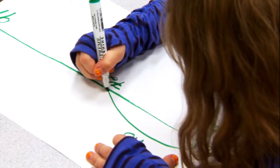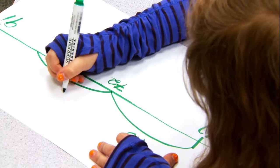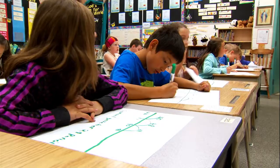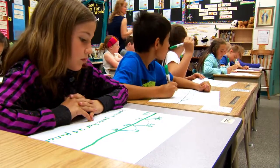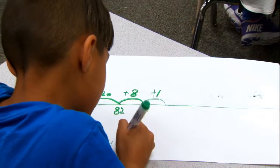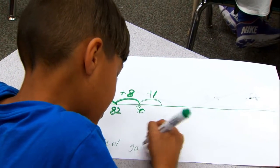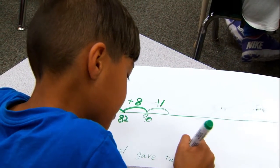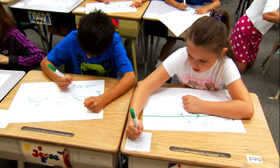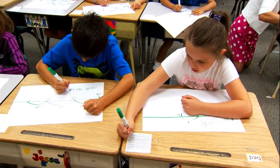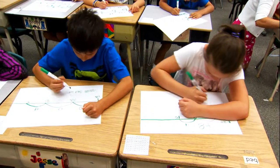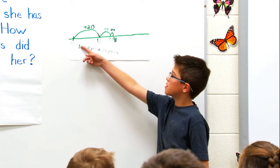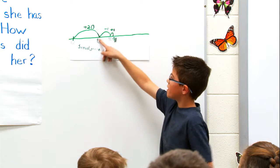The open number line is a number line with no numbers or markers. It starts out empty and the students add numbers to solve the problem. The student makes jumps along the number line and records both the value of the jump and the number landed on. Students use benchmark numbers, usually multiples of 10, to break the problem down using friendlier numbers.